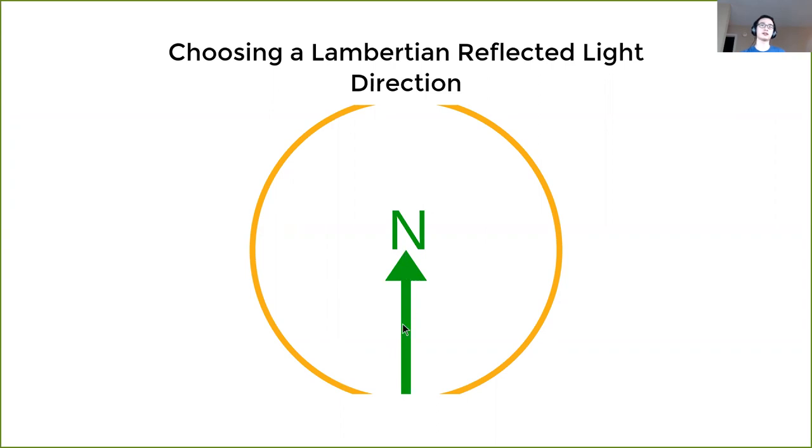And the radius of this unit sphere is two. If we generate a ray from this intersection point towards the point on that sphere, and then we just normalize that, we will get exactly the distribution of Lambertian reflection we want.